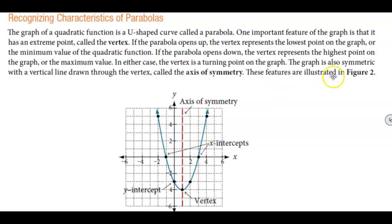Now the graph is also symmetric with a vertical line drawn through the vertex. So here you have the axis of symmetry. That is the vertical line and it's also called the axis of symmetry.